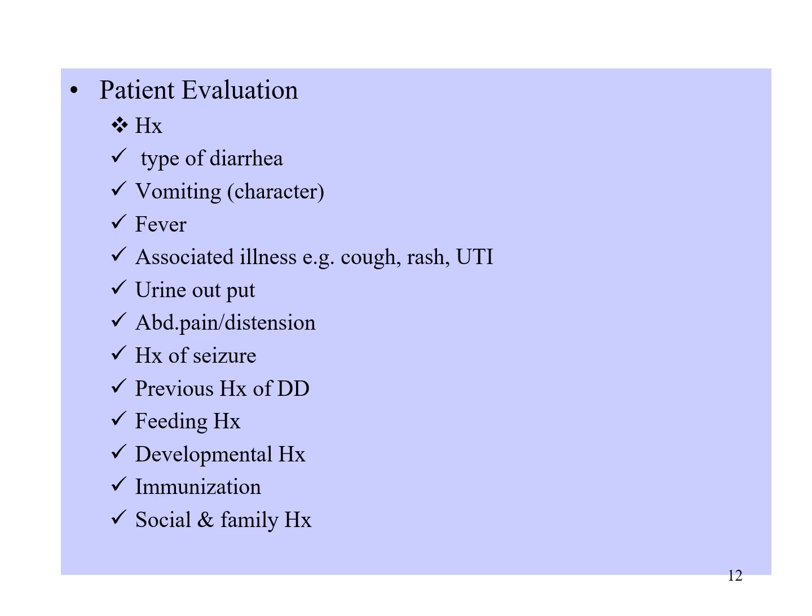When evaluating a patient with diarrhea, we should ask about the type of diarrhea — whether it is acute, chronic, or bloody — vomiting and stool character, presence of fever or associated systemic manifestations, urine output, abdominal pain or distension, history of seizure, previous history of diarrheal disease, feeding history such as duration of exclusive breastfeeding, developmental history, immunization, and social and family history, especially the source of water for food preparation and drinking.